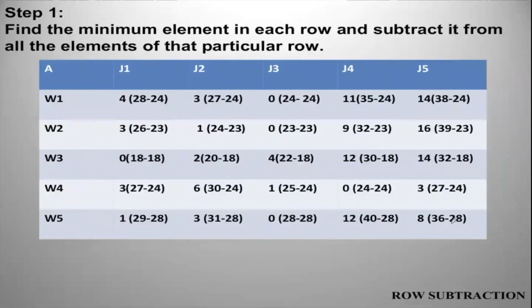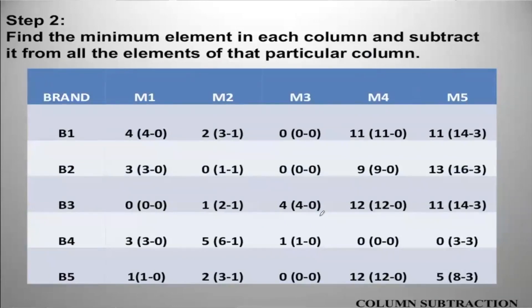Step two: repeat the same process for columns. In column one, the minimum value is zero, so values remain the same. In column two, the minimum value is one, so subtract one from each element. Column three has minimum zero, so it remains the same. Column four also has a zero as its minimum, so it remains the same. In column five, there is no zero, so the minimum is three — subtract three from each element. The new table after column subtraction is then written.